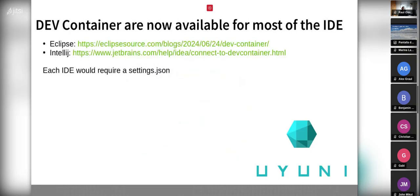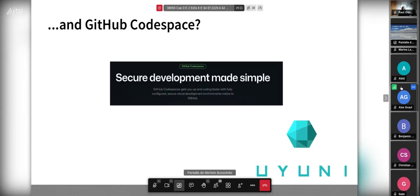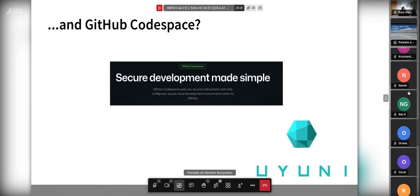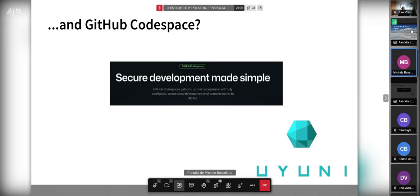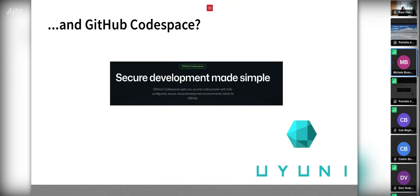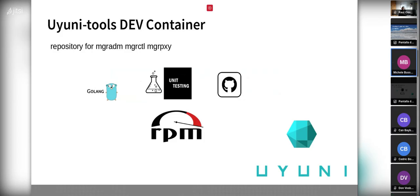The slide shows VS Code, but interestingly the dev container can also be used in Eclipse and other JetBrains IDEs. The container itself is the same; only the settings JSON needs to be customized per IDE. Additionally, GitHub provides GitHub Codespaces — essentially a dev container hosted on the cloud by GitHub — and Michele has done some tests showing it works pretty well.